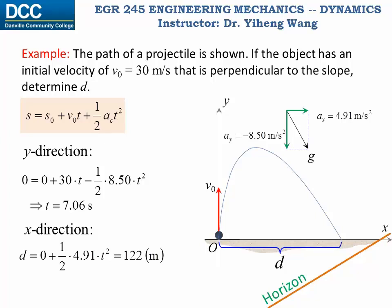And then if you plug this information into the equation for the x direction motion, you can solve for the distance directly from this equation to be 122 meters, which is the same as the previous answer. So just an alternative way to solve the same problem, and it is up to you to decide which one you prefer.